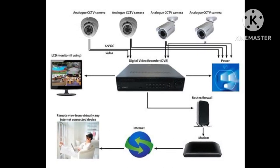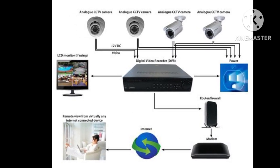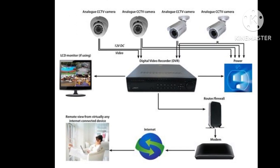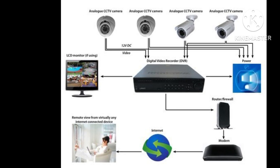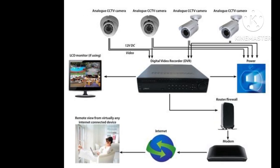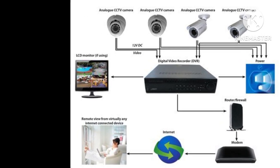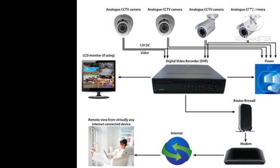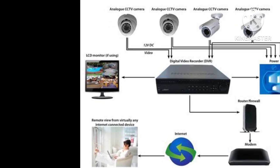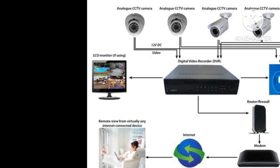Analog CCTV. This is the traditional type of CCTV system that uses analog cameras and records video onto tapes or DVRs, digital video recorders. It provides basic surveillance and requires wired connections for video transmission.